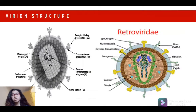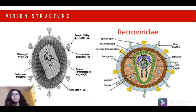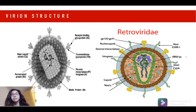Generally, retroviruses are 80–100 nanometers in diameter with a spherical to pleomorphic-shaped capsid. The virus is enveloped, composed of virus-encoded glycoprotein spikes, while the nucleic material is the genomic RNA that you'll see in the next slide.